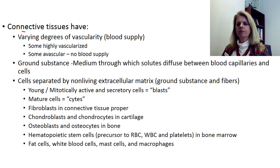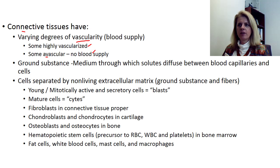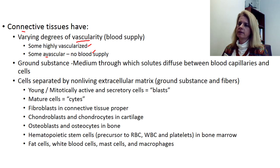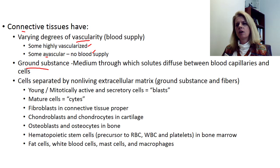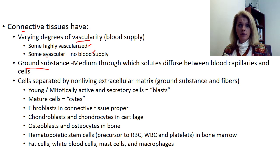Some characteristics of connective tissue: they are not all the same. They have different degrees of blood supply, or vascularity. Some are highly vascularized with a lot of blood supply, and some are avascular with no blood supply. For example, cartilage has very little blood supply compared to bone, which has a lot. It's actually better to break a bone than tear cartilage because bone will heal better due to its greater blood supply. They also differ in the types of ground substance — the medium through which solutes can diffuse between the capillaries and the cell.